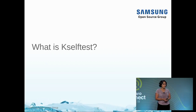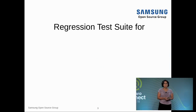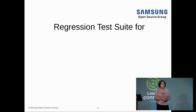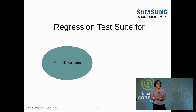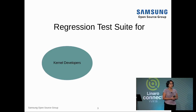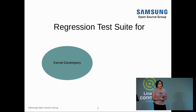What is kselftest? It is a kernel regression testing tool. If you look at the Git logs, you'll see the very first tests were added back in 2005. It mainly started as a kernel developer regression test, meaning kernel developers write their own unit tests or functional tests to find bugs and add tests when they add new features, so we are not regressing anything.